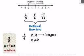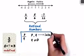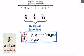So this is the basic definition of rational numbers. It is a number of the form P by Q where P and Q are integers and Q is not equal to zero.